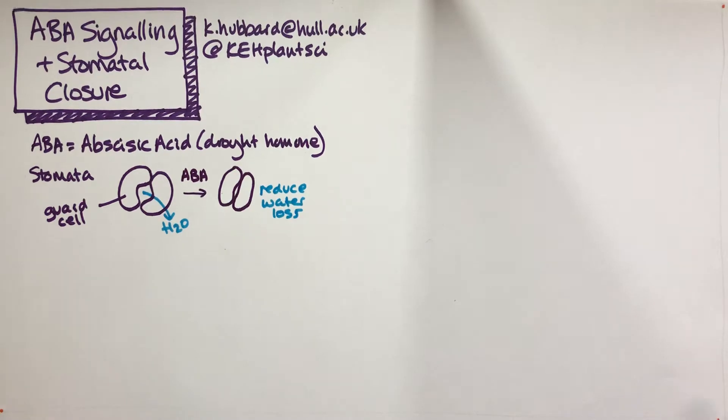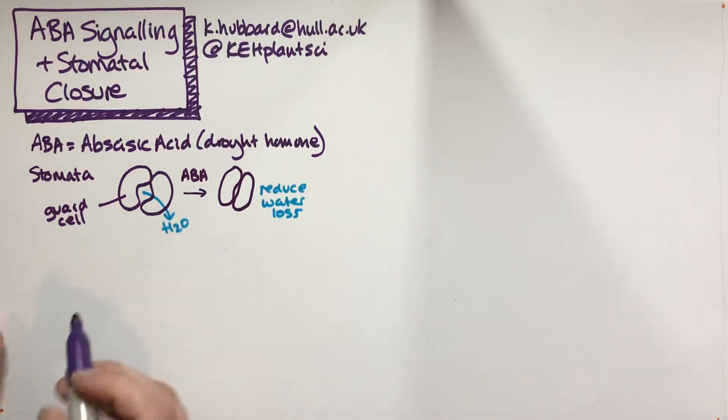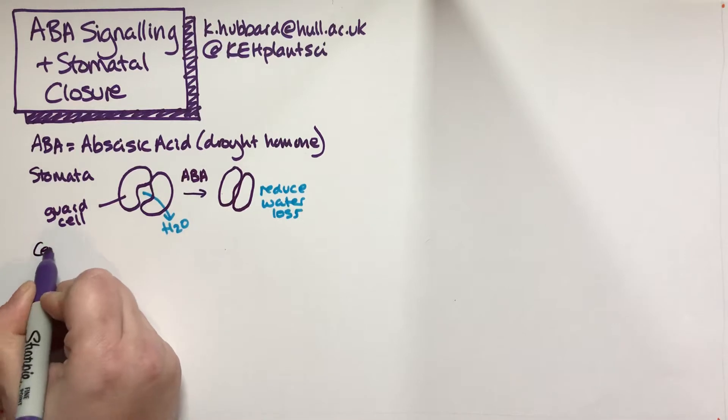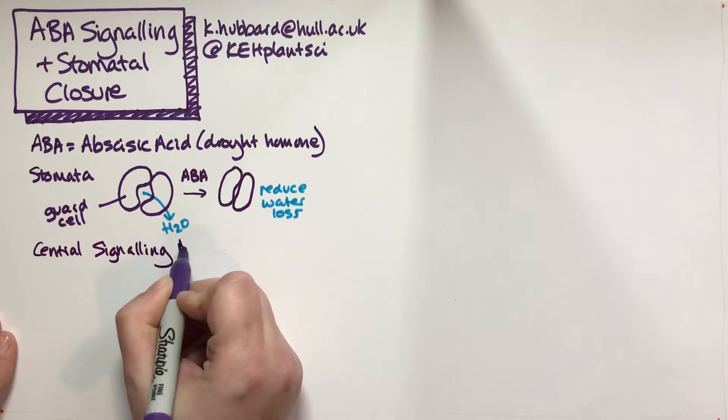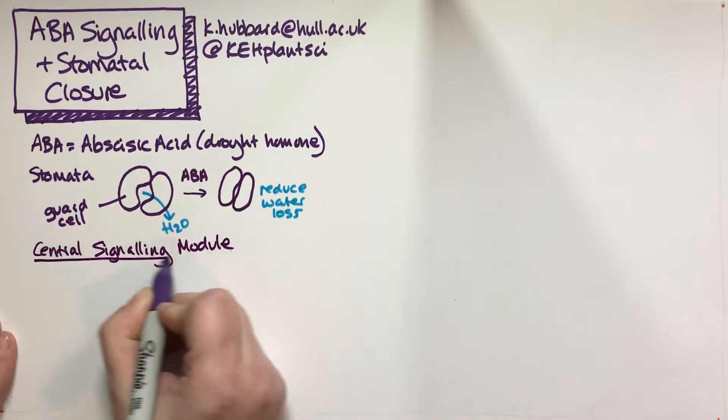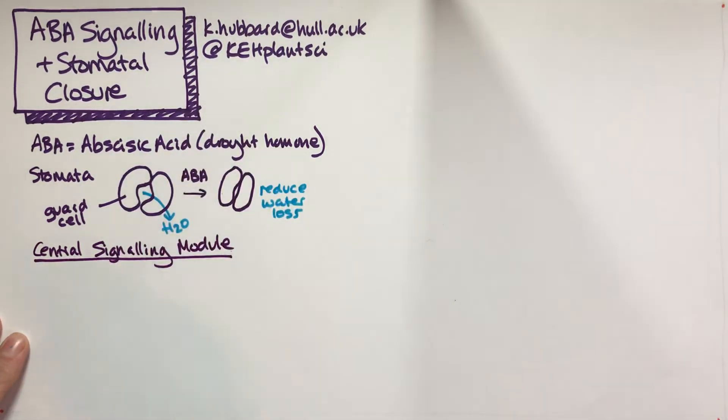This is a really important physiological parameter for plants, so quite a lot of effort has gone into understanding how ABA signaling and stomatal closure works. The ABA receptor was only relatively recently identified. I'm going to go through what we call the central signaling module for ABA, and then relate that to what's happening in the guard cell.